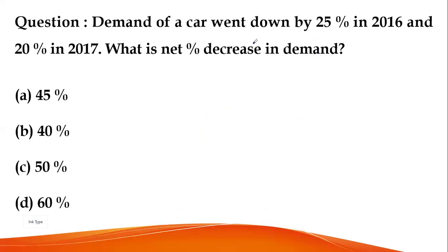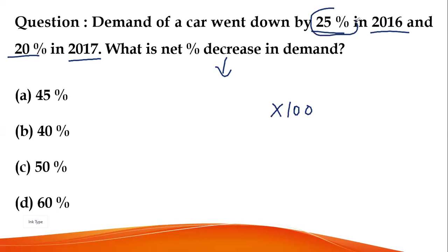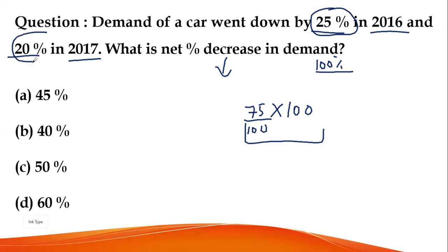Next question: the demand for a car went down by 25% in 2016 and 20% in 2017 — went down means it decreased. Using the second approach, take the original demand as 100. In 2016, demand decreased by 25%, so 75% remains. In 2017, it decreased by another 20%, so 80% remains.